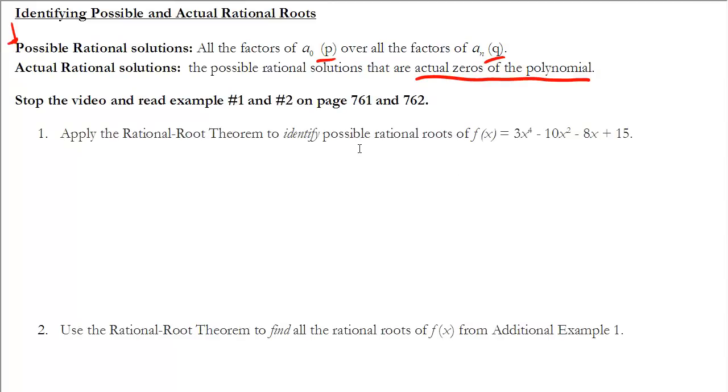You might want to read examples 1 and 2 on page 761 and 762 before continuing on with the next two examples here. But let's take a look at example 1. It says apply the rational root theorem to identify the possible rational roots of f of x. To do that, what I want to do is I want to list my factors of a sub 0, which are my possible p values. The possible values that I could have for p are plus or minus for all of these. Because these are the factors of 15: 1, 3, 5, and 15.